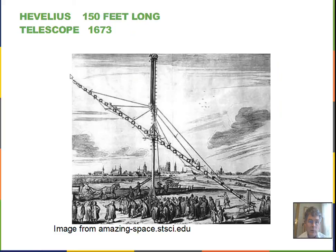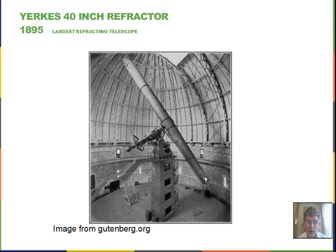As telescopes developed over the years, there are some historical milestones. In the late 1600s, one telescope was 150 feet long — very unwieldy to point at the desired object — but it had the advantage of combating chromatic aberration. The largest refracting telescope is 40 inches in diameter, at the Yerkes Observatory north of Chicago, constructed in 1895. It gathers light through a very large lens and brings it down to an eyepiece.